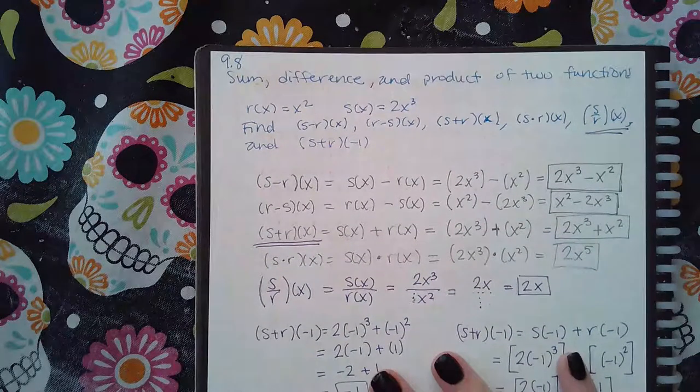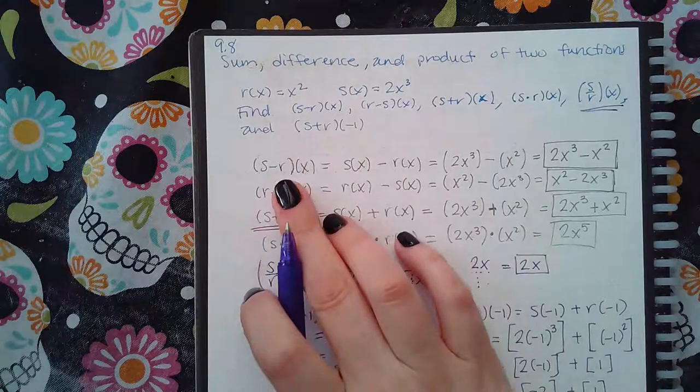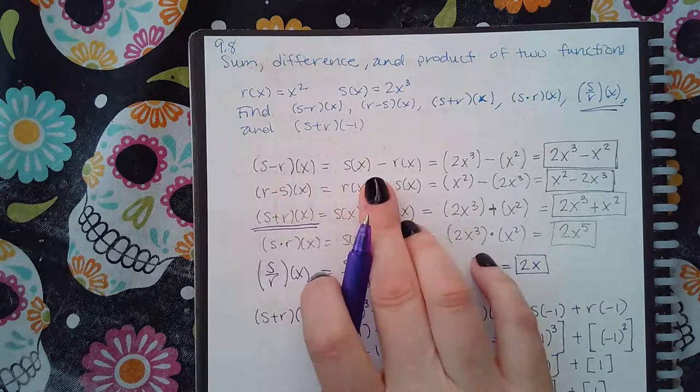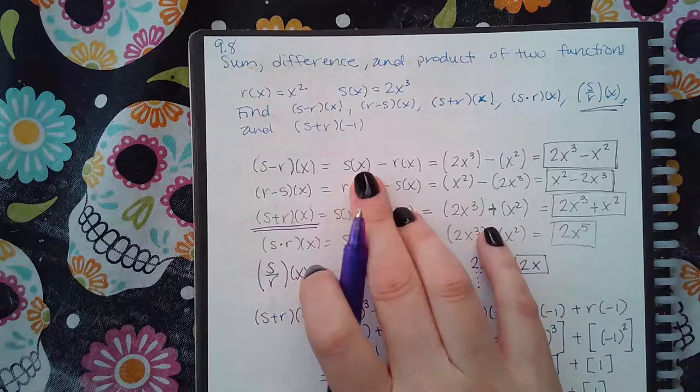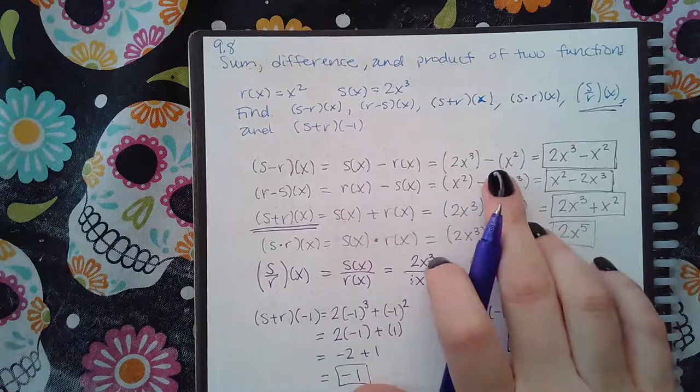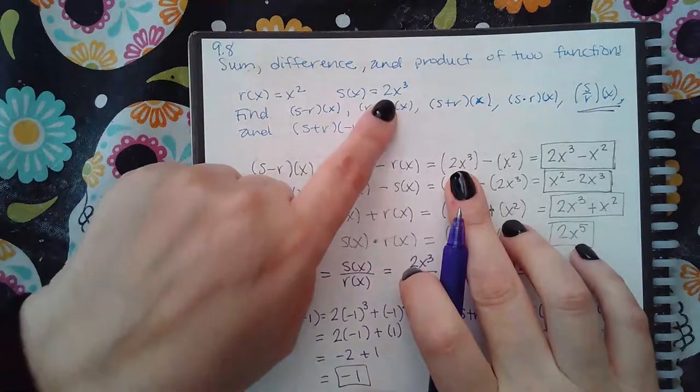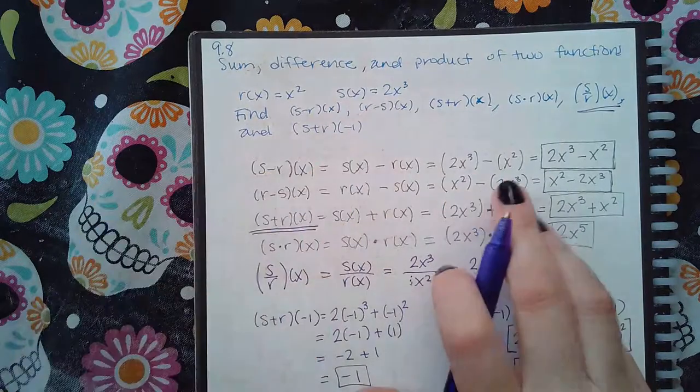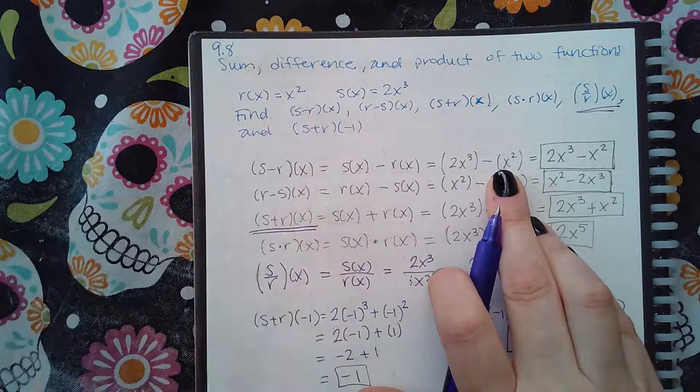What we first need to do to find (s - r)(x) is rewrite that so it says s(x) minus r(x). Then you replace s(x) with what it is equivalent to: s(x) is equivalent to 2x cubed. And then you replace r(x) with what it is equivalent to, which is x squared.